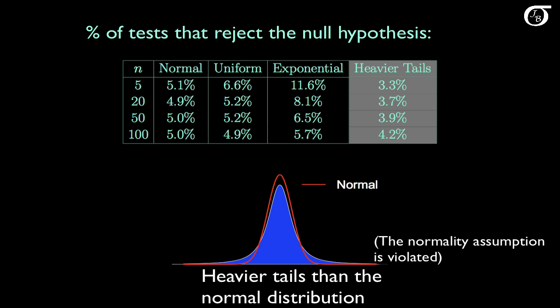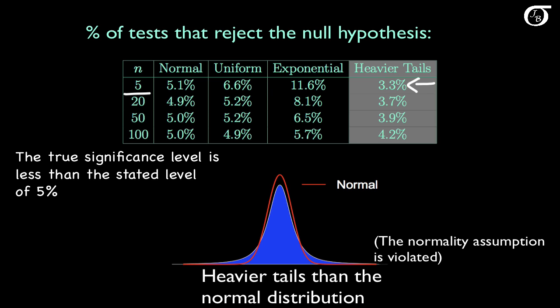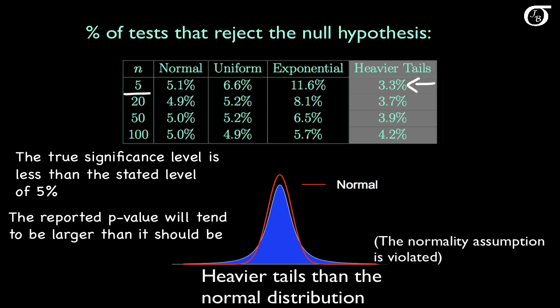Here we're sampling from a distribution that looks very similar to the normal distribution but has heavier tails. When the sample size is 5, we state a significance level of 5%, but in reality it's closer to 3.3% — the true significance level is actually less than the stated level. We're not rejecting the null hypothesis enough, and the reported p-value tends to be too large. Again, that effect starts to go away as the sample size increases, with observed percentages getting closer to 5%.